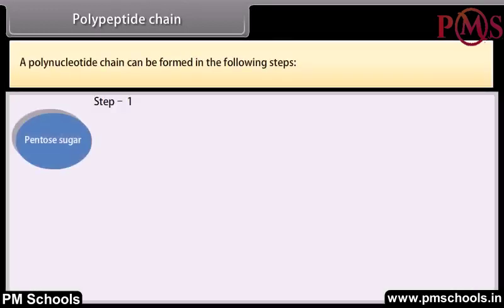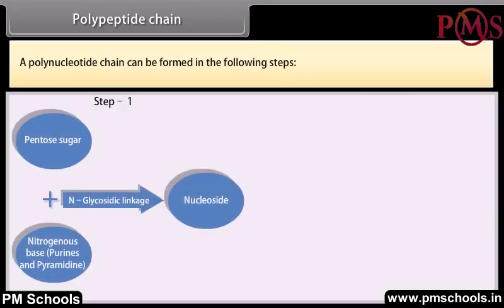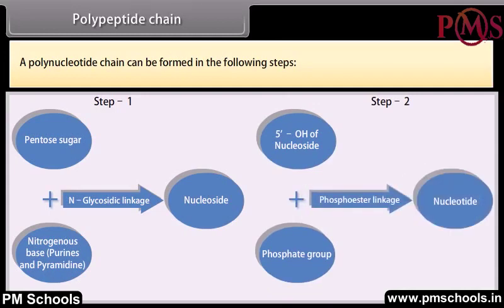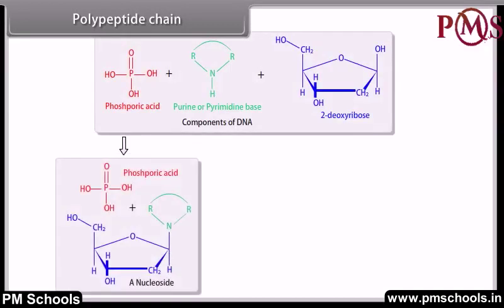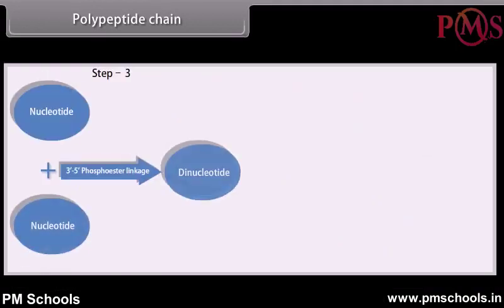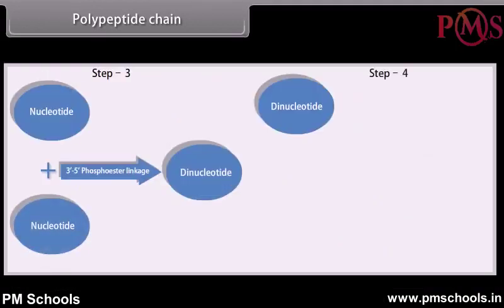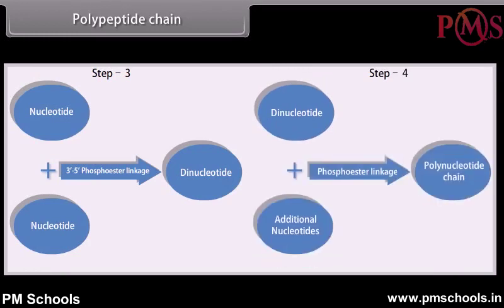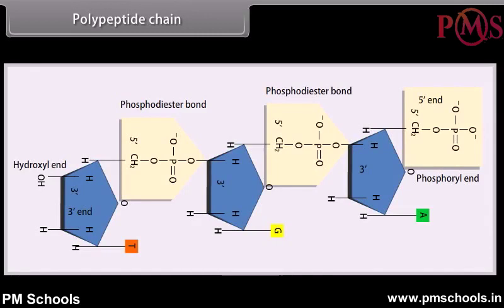A polynucleotide chain can be formed in the following steps. A polynucleotide chain has a phosphate moiety at one free end of ribose sugar. This is known as the 5' end of the polynucleotide chain. The other free end of ribose sugar has an attached OH group. This is called the 3' end of the polynucleotide chain.